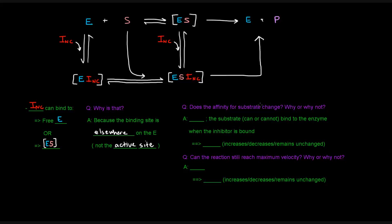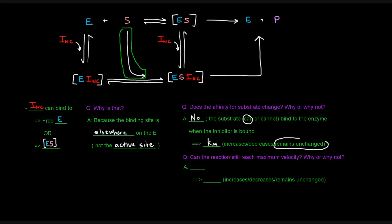Now, does the affinity for the substrate change? The answer is no, because the substrate can still bind to the enzyme when the inhibitor is bound. We can see that here: the substrate can bind the enzyme-inhibitor complex, or it can just bind the free enzyme to form the enzyme-substrate complex. So the affinity has not changed, and thus the KM remains unchanged.